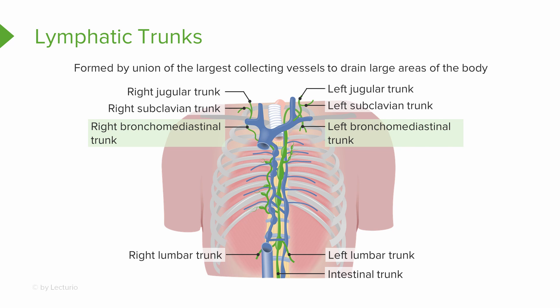The thoracic wall, the lungs, and the heart are also drained. The paired subclavian trunks are going to drain lymph from the upper limbs. The paired jugular trunks are going to drain lymph from the head and the neck. And finally, the single intestinal trunk is going to drain lymph from our stomach, intestines, pancreas, spleen, and parts of the liver.